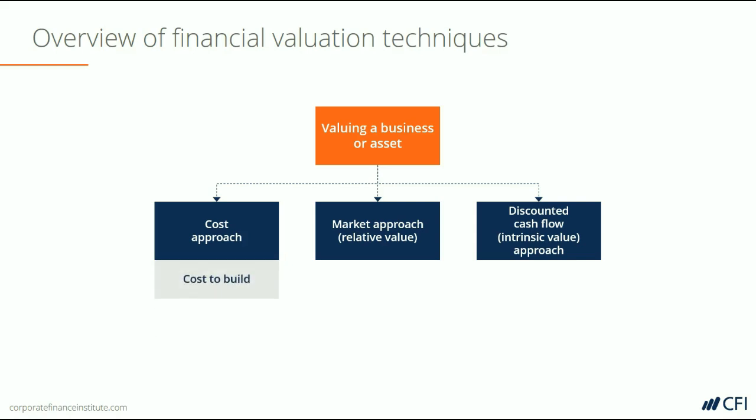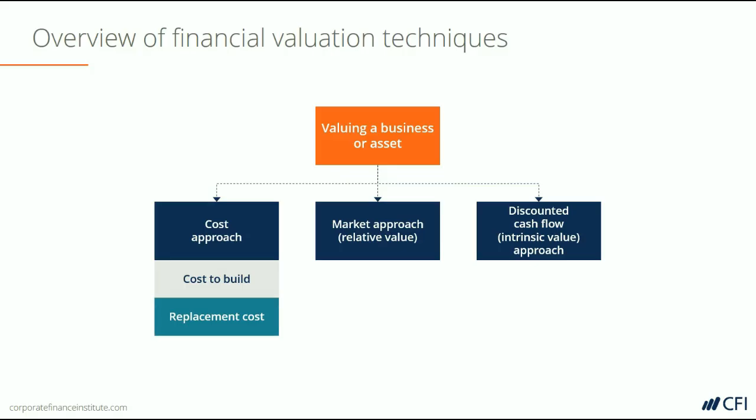When it comes to the cost approach, there are two different methods. One is looking at what the cost to build something was — for example, if you were going to buy a company that had a manufacturing facility, how much has been invested in building that facility and what was the total cost. Another approach is to look at the replacement cost, because inflation and changes in technology may mean the replacement cost today is dramatically different than the original build cost.